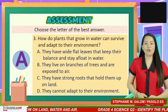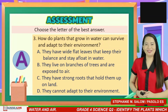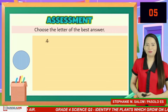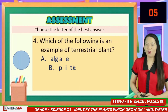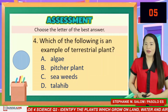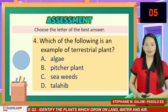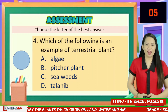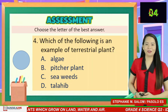If your answer is letter A — well done! Number 4: Which of the following is an example of a terrestrial plant? A. Algae, B. Pitcher plant, C. Seaweeds, D. Talahib. You have five seconds to answer.